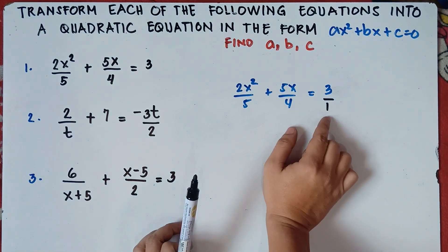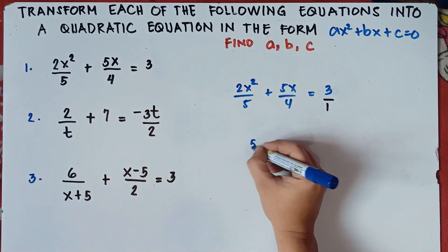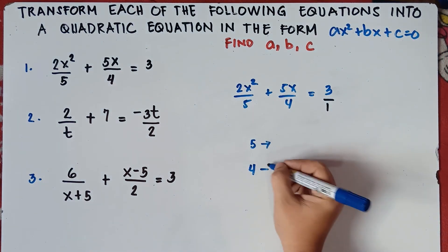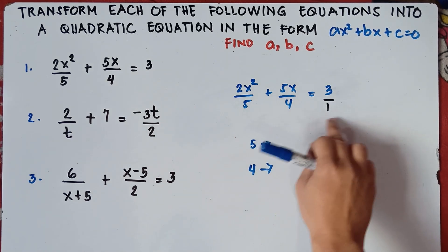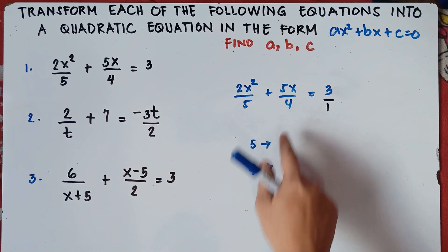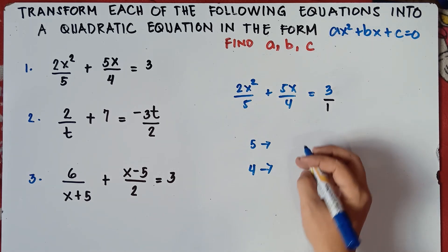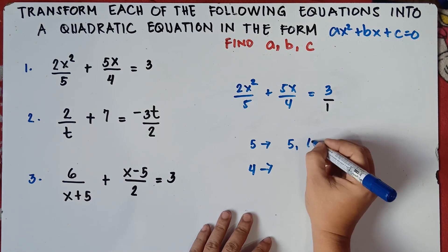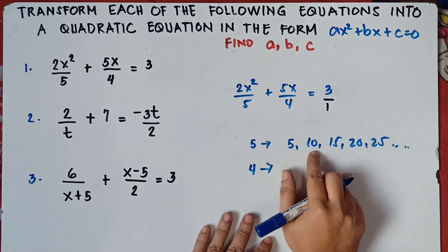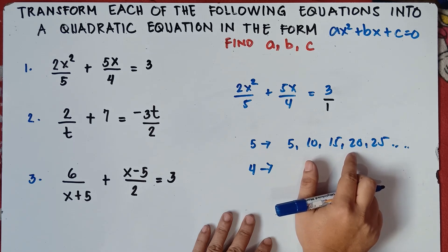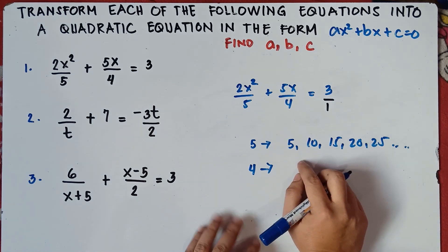Since any number can be divided by 1, we will just find the LCM of 5 and 4. The multiples of 5 are: 5, 10, 15, 20, 25, 30, and so on.